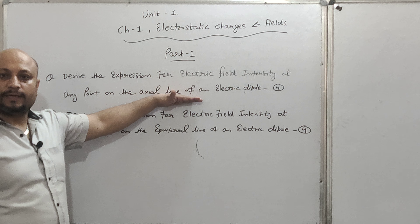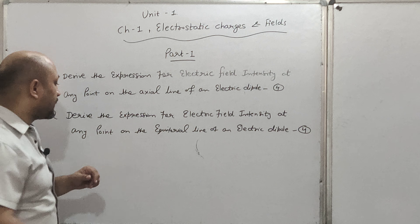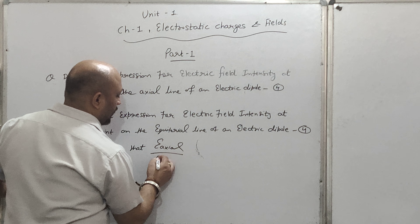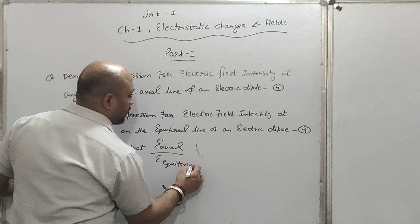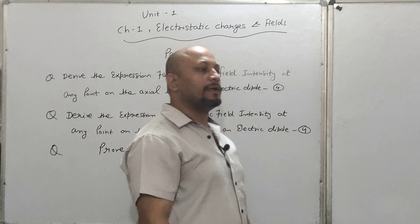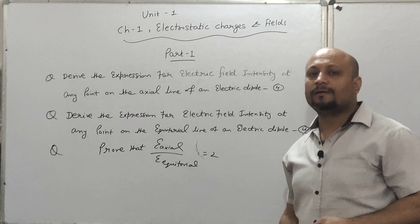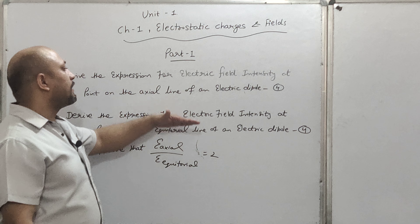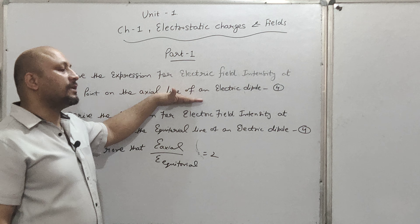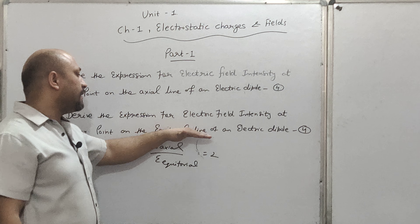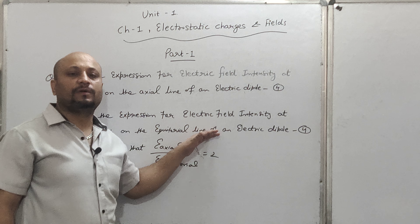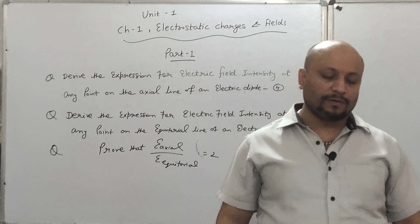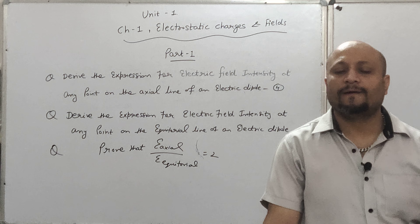कभी-कभी examiner यह भी पूछता है: Prove that E_axial / E_equatorial = 2। अगर यह question आए तो यह five marks में आएगा। इसके लिए पहले axial line का derivation करें — equation number 1, फिर equatorial का — equation number 2, फिर equation 1 को equation 2 से divide करें। Result: E_axial / E_equatorial = 2।